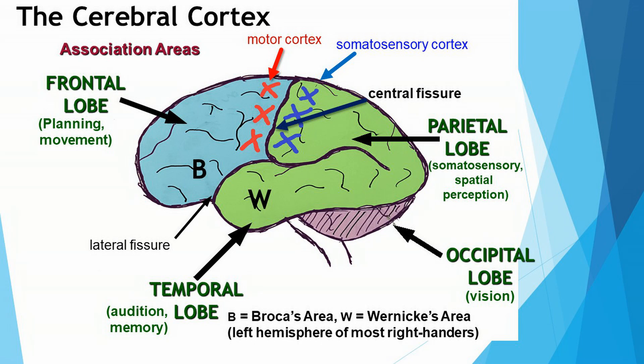Finally, we need to talk about the association areas. These are the parts of the cerebral cortex that we haven't talked about yet — basically, everything else in the cerebral cortex. People have wondered about the functions of the association areas for many years, and here's the best explanation that I can give.